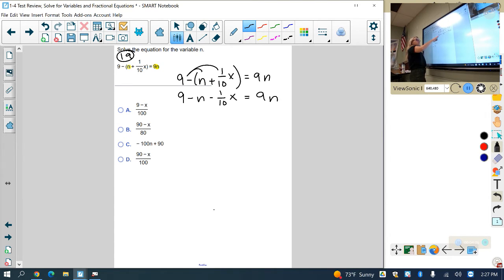Now, instead of dealing with this fraction, I'm going to go ahead and multiply everything by 10 so I can get rid of the fraction, which is what we did on our last quiz, where I'm going to multiply by 10, and I have 90 minus 10n minus x, because 1 tenth of 10 is just 1, or x equals 90n.